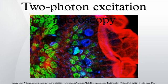Two-photon microscopes are less damaging to the sample than a single-photon confocal microscope. The most commonly used fluorophores have excitation spectra in the 400–500 nanometers range, whereas the laser used to excite the two-photon fluorescence lies in the 700–1000 nanometers range. If the fluorophore absorbs two infrared photons simultaneously, it will absorb enough energy to be raised into the excited state. The fluorophore will then emit a single photon with a wavelength that depends on the type of fluorophore used. Because two photons are absorbed during the excitation of the fluorophore, the probability for fluorescent emission increases quadratically with the excitation intensity. Therefore, much more two-photon fluorescence is generated where the laser beam is tightly focused than where it is more diffuse.